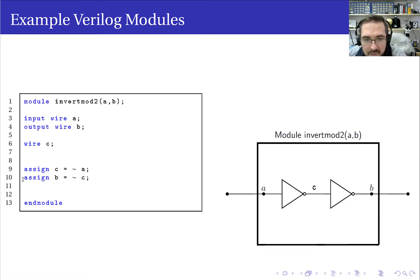So I have two assign statements. The first one is assign C—that would be at this point—is equal to NOT A. And then the second one is assign B is equal to NOT C.